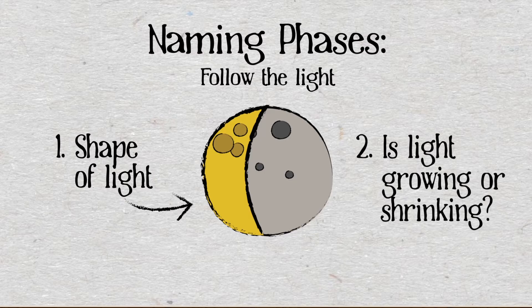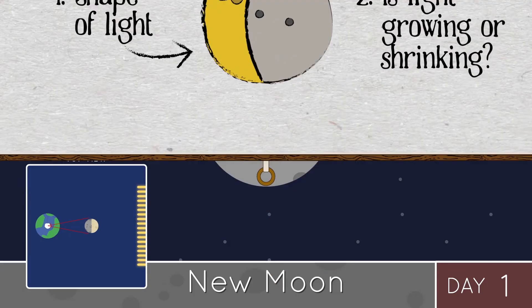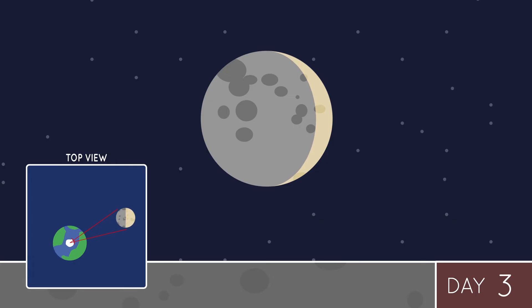Let's start at the start. When the moon is between the sun and the Earth, we call this the new moon. Then, the moon moves around the Earth, and we begin to see a little bit of light growing across it. This is called a waxing crescent.